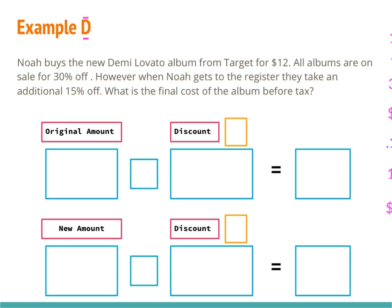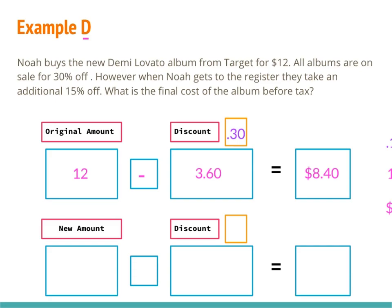In example D: Noah buys a Demi Lovato album from Target for $12. All albums are on sale for 30% off, but when Noah gets to the register they take an additional 15% off. What is the final cost before tax? I've laid out six boxes for two discounts. Starting with the original amount of $12, I subtract 30% — as a decimal 0.30 — so $12 times 0.30 gives $3.60. Then $12 minus $3.60 equals $8.40.